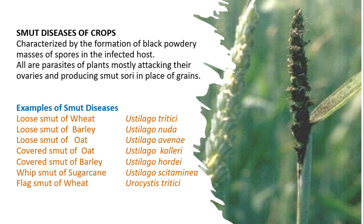Examples of smut diseases include loose smut of wheat, barley, and oats, caused respectively by Ustilago tritici, Ustilago nuda, and Ustilago avenae. Covered smut of oats and barley are caused by Ustilago kolleri and Ustilago hordei respectively. Whip smut of sugarcane is caused by Ustilago scitaminea, and flag smut of wheat is caused by Urocystis tritici.